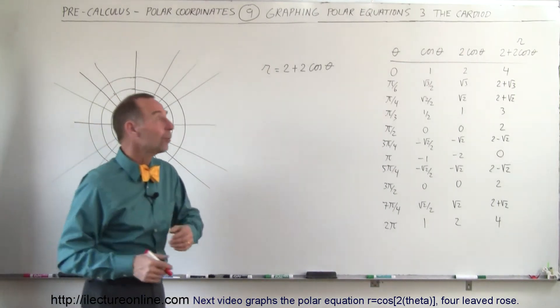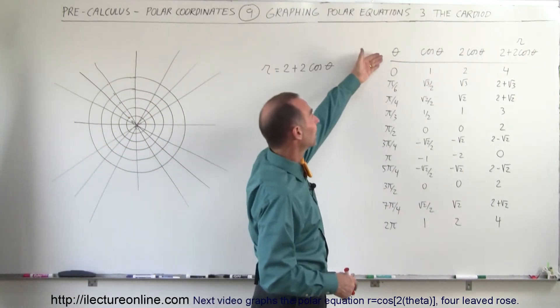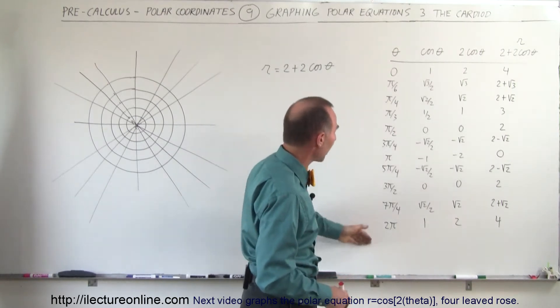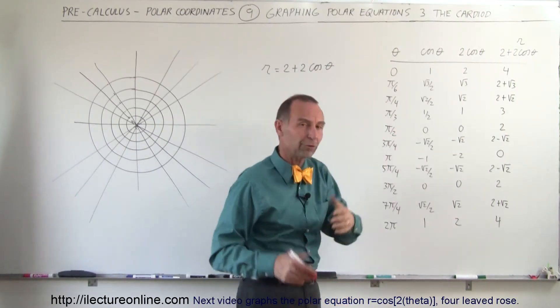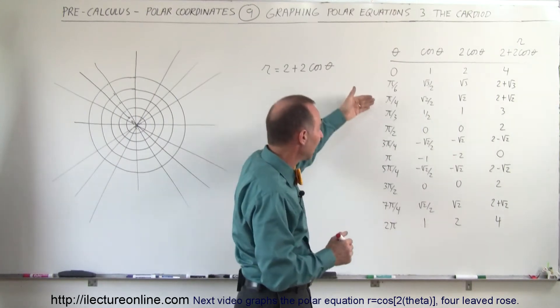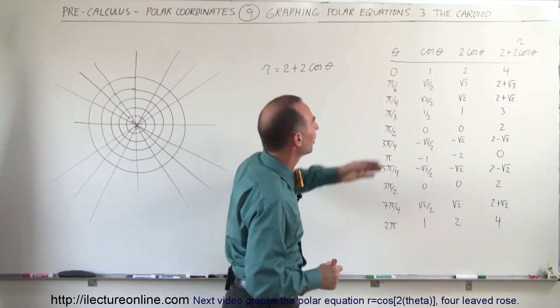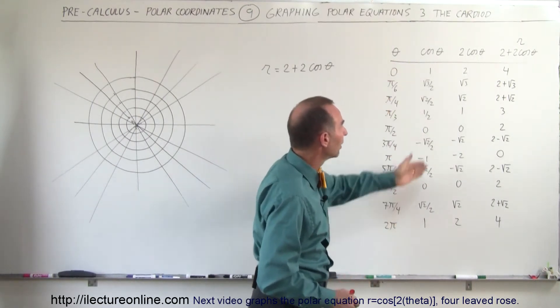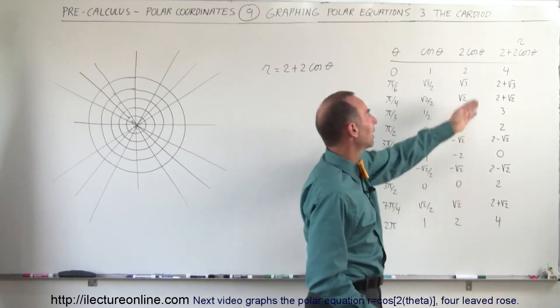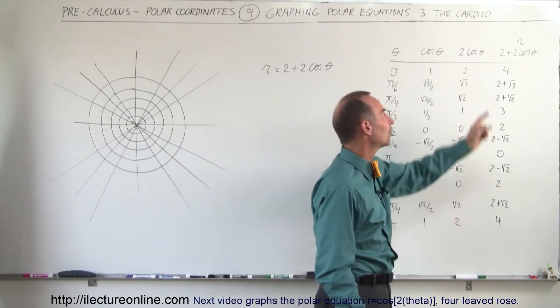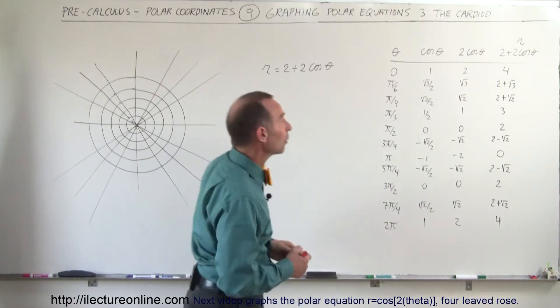And again, to help us out, we have a table of values. For theta, an angle anywhere from 0 to 2π, in radians, the first 90 degrees, or the first π over 2, we took small intervals, and then we took some bigger intervals. Then we found the cosine of theta, twice the cosine of theta, and then 2 plus twice the cosine of theta, which is equal to r, the variable that we want to then graph.